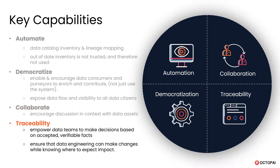Finally, traceability — which ultimately is the lineage. BI teams are not going to self-serve unless they know for a fact that the data they're about to consume is data they're comfortable committing to. Data engineers need to know what would be impacted if they make a change, because they need to maintain these data pipelines. These flows have to connect with each other — you need to know what's upstream of an asset, why you're working on it, and before making a change, where to look for any potential impact.